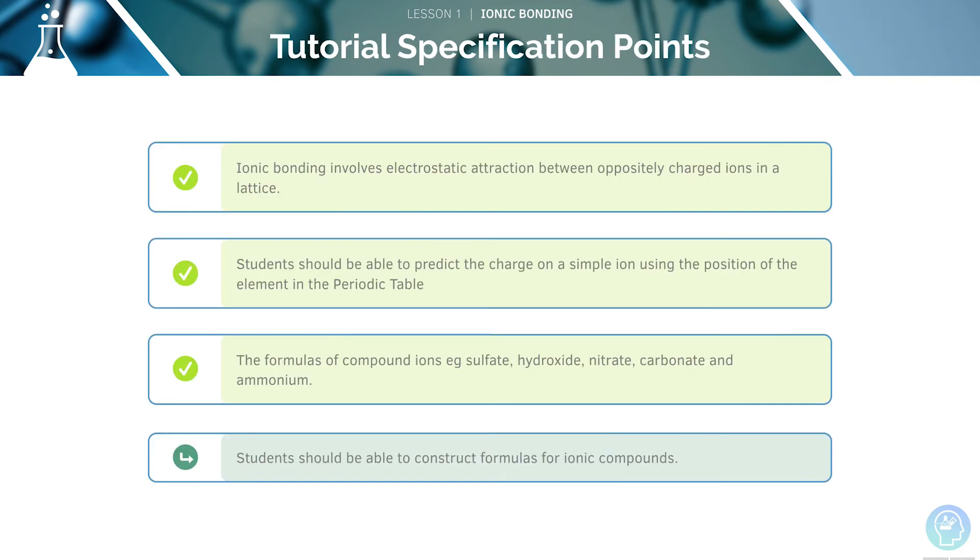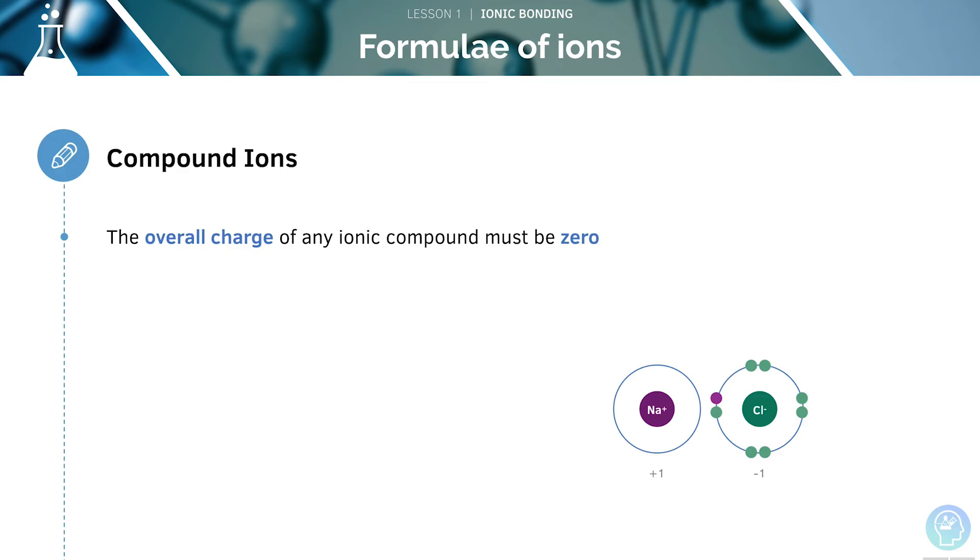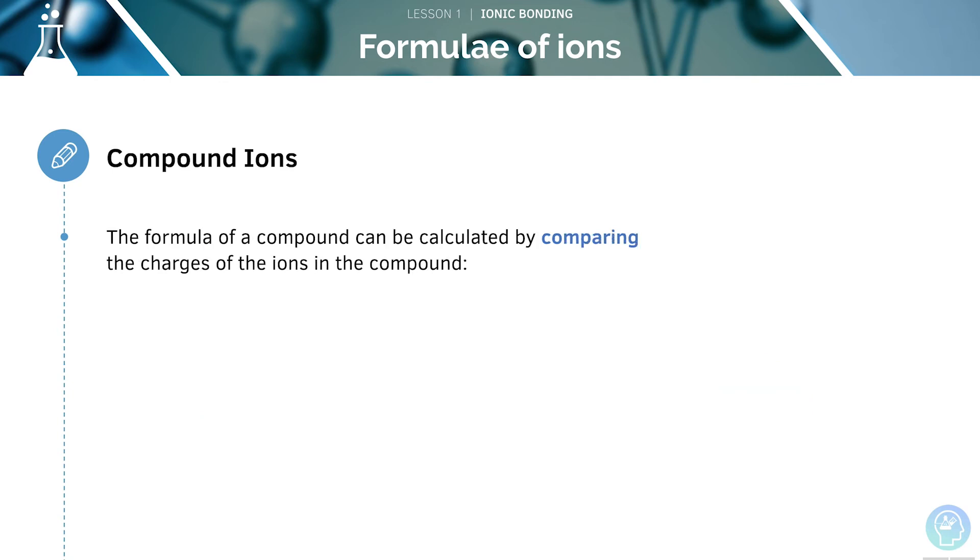Let's move on to our final specification point, covering how to construct formulae from ionic compounds. If an ionic compound has an overall charge of 0, it must consist of ions with charges that balance each other out. For example, NaCl is an ionic compound. It is made of the ions Na+, which has a plus 1 charge, and Cl-, which has a minus 1 charge. These two charges will balance out to give us an overall charge of 0. The formula of a compound can be calculated by comparing the charges of the ions present in that compound. If there are two ions present in an ionic compound where one has a charge of plus 1 and the other has a charge of plus 2, two positive ions will be needed to balance the charge of the minus 2 ion.